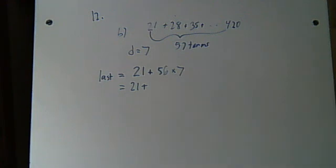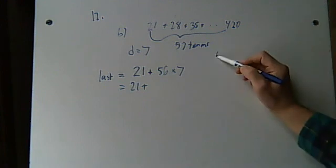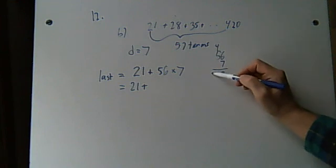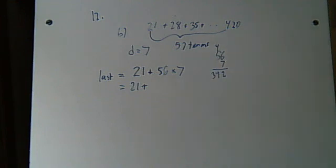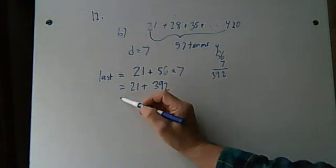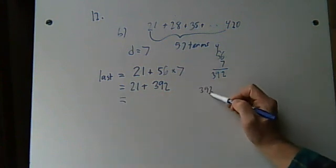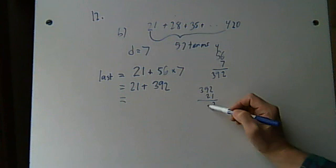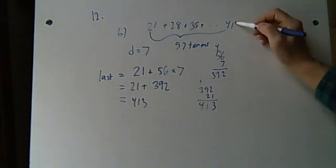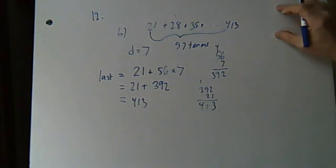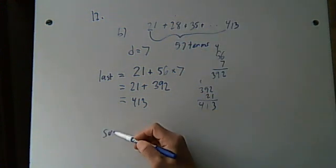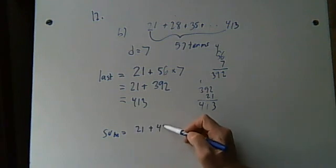57 times, 56 times 7, 2, 4, 392. So let's see if that comes out any better. 392 plus 21. So the last term, according to this, 21, 3, 11, 1, 413. Okay? So now I'm saying that the actual last term is only 413. I put on an extra term accidentally when I did that. Now that means that the sum is equal to 21 plus 413.